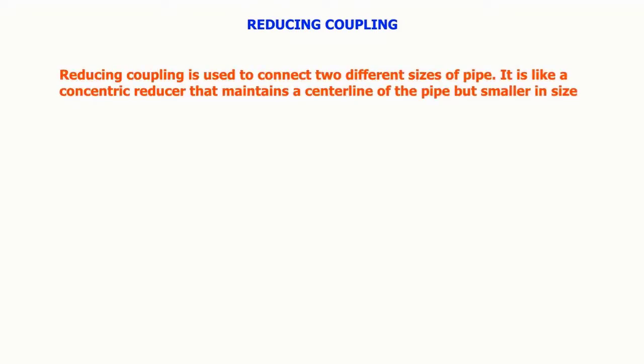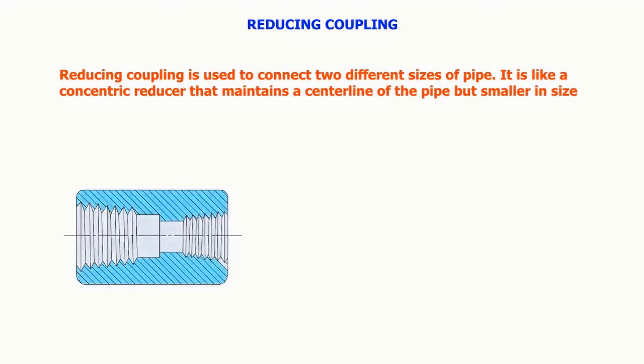Reducing coupling is used to connect two different sizes of pipes. It is like a concentric reducer that maintains a center line of the pipe but smaller in size.